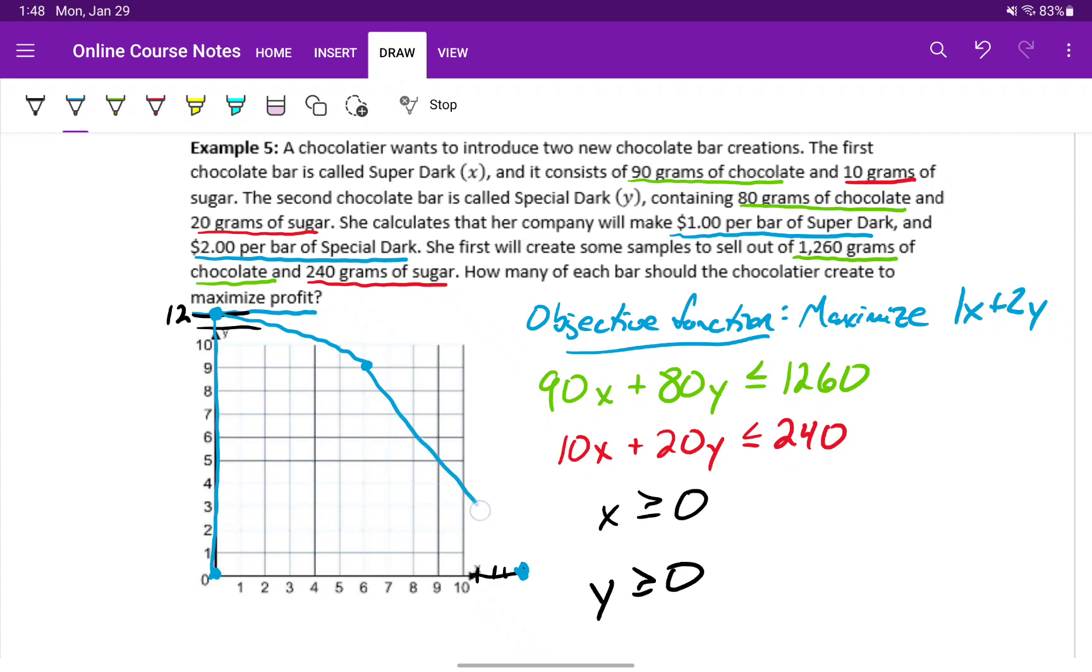We can draw that bounded region. That's our feasible region, and those are our corner points that we want to test.